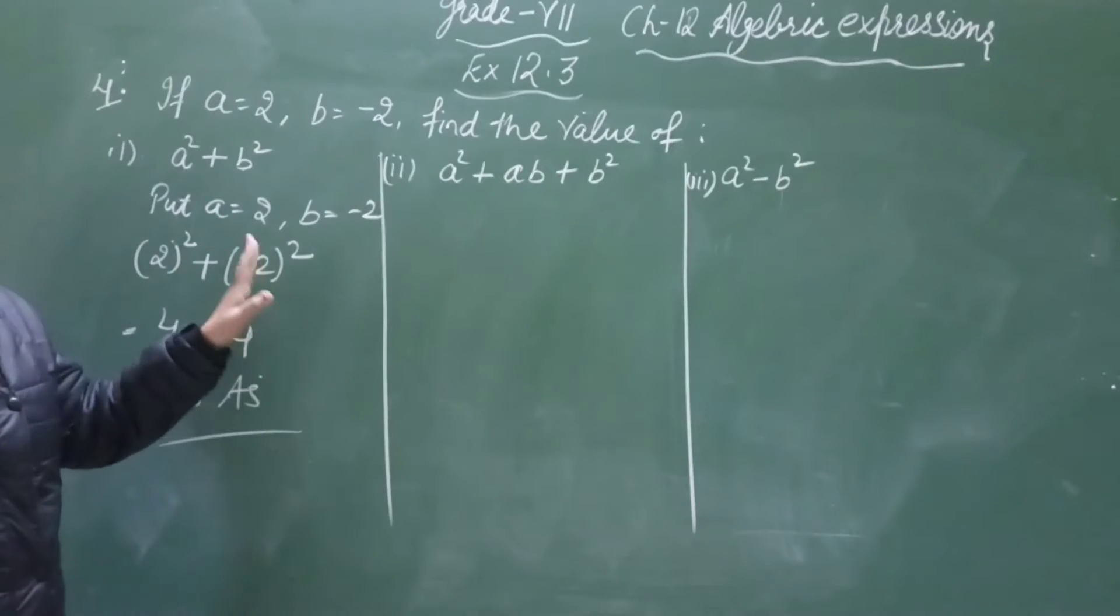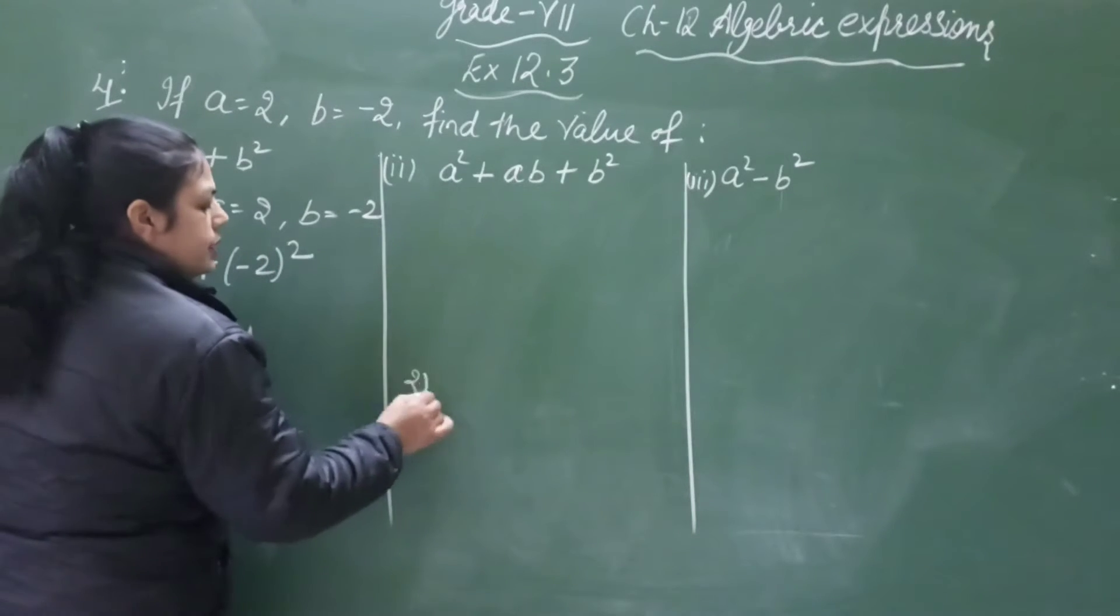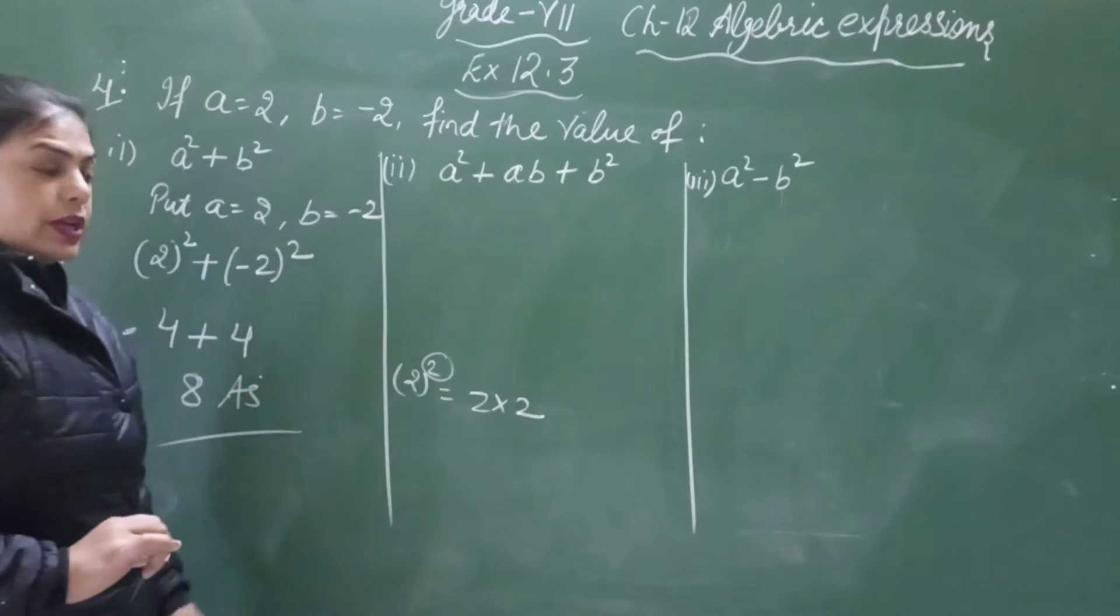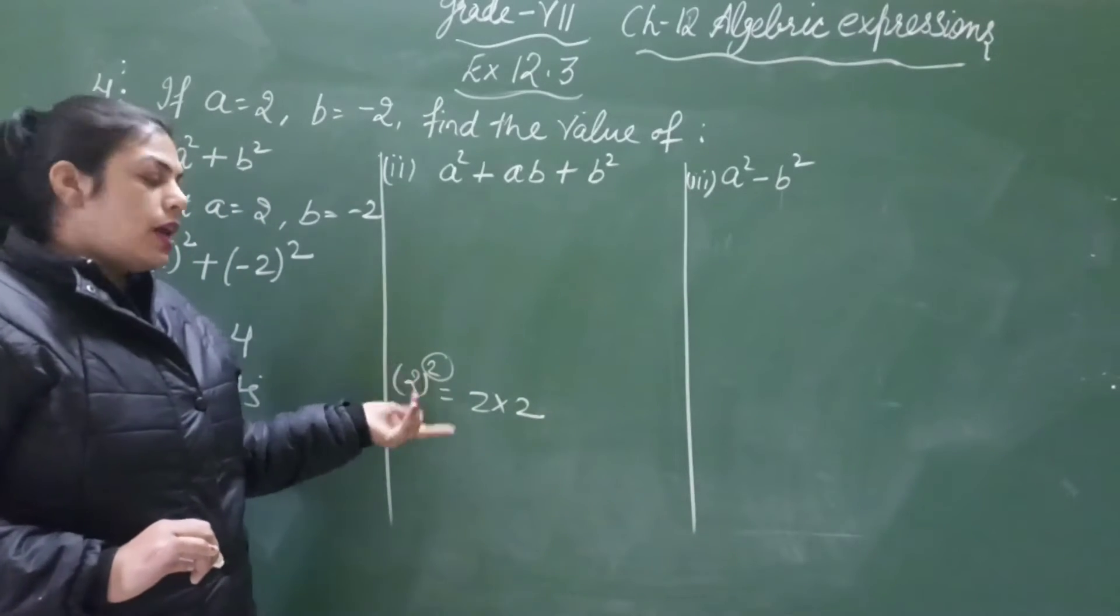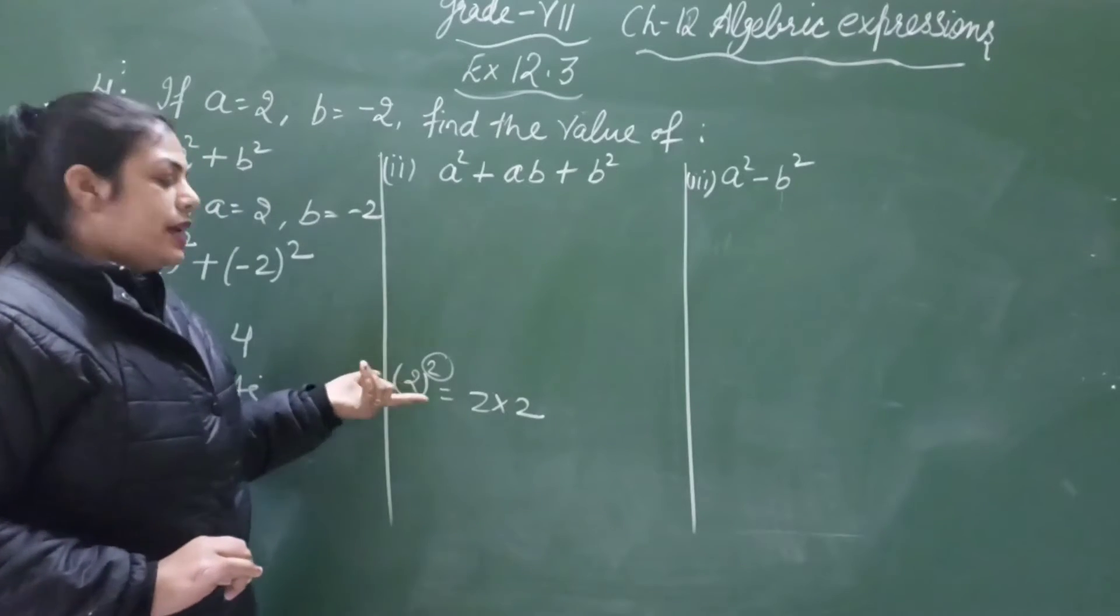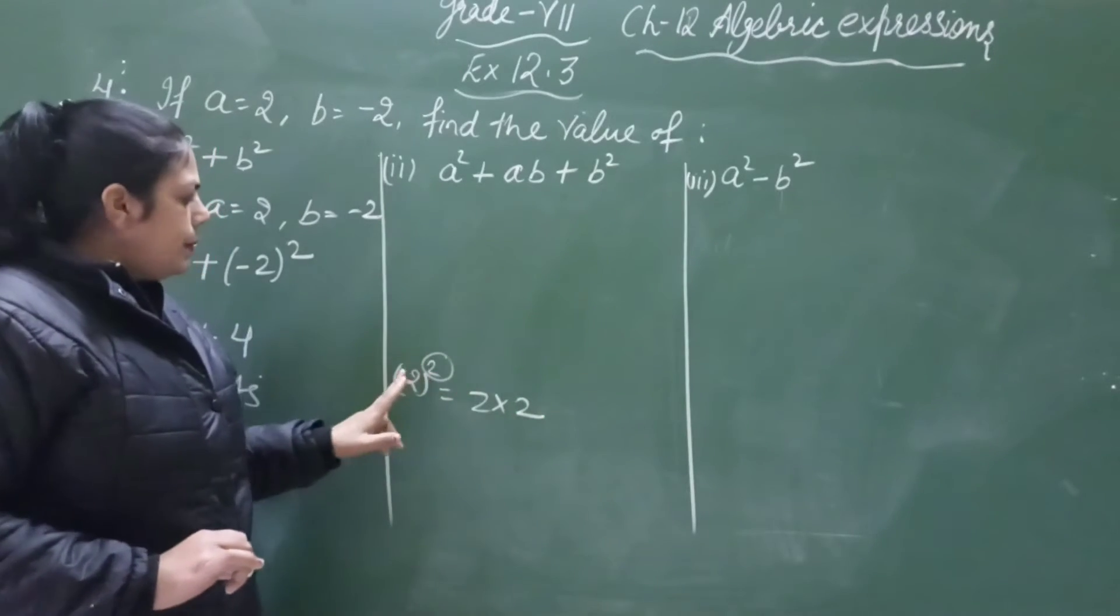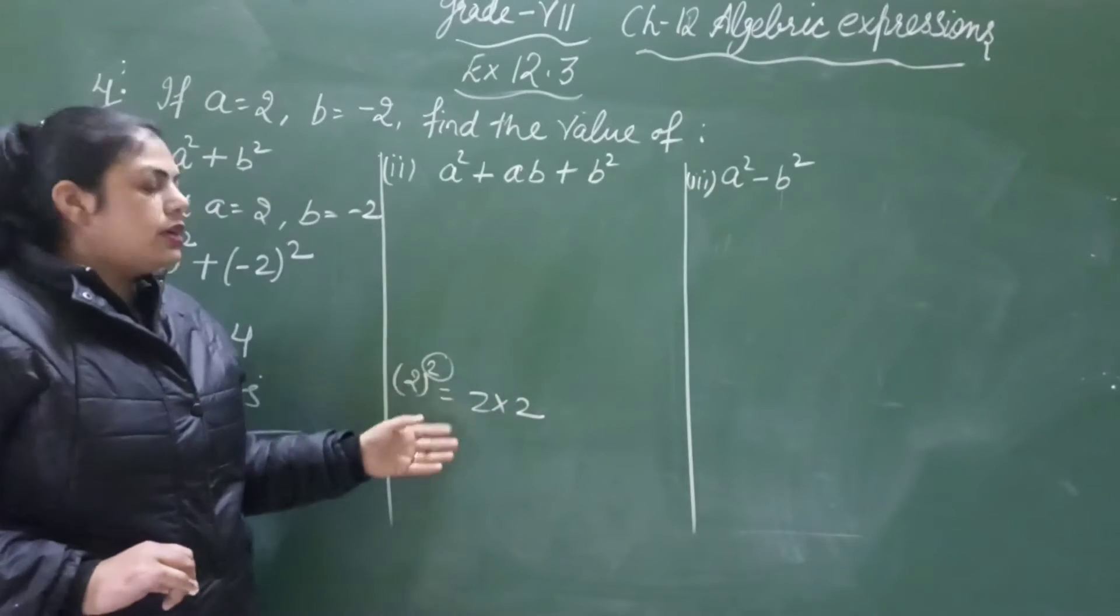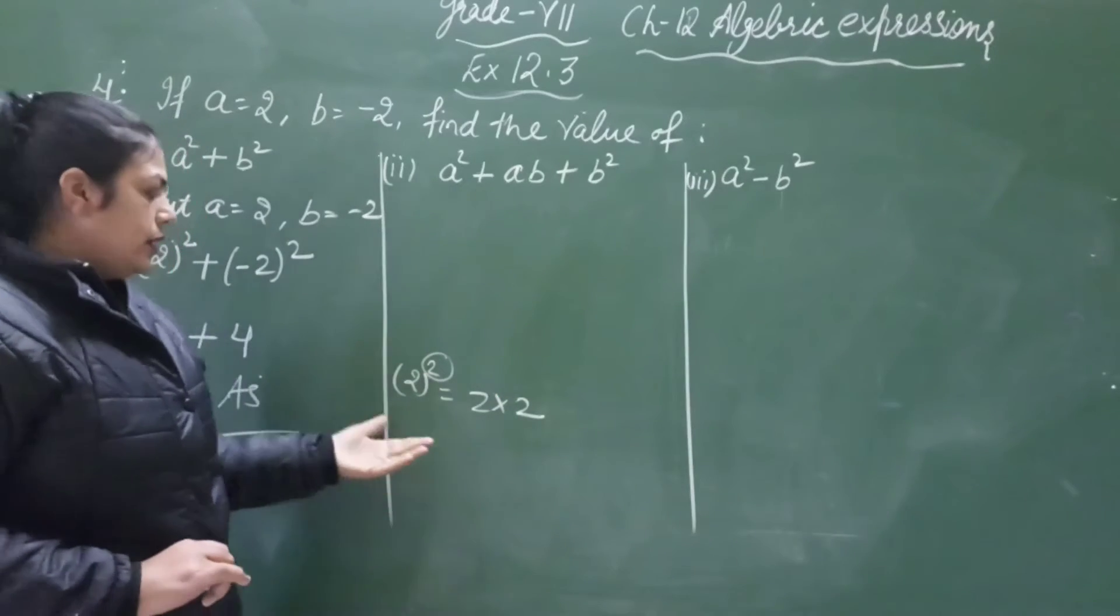2 square means we have to multiply 2 by itself 2 times. We have to multiply the base that many times. With power 2, we multiply the base 2 times. With power 3, we multiply the base 3 times. Clear?